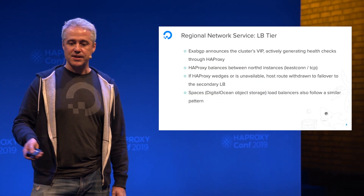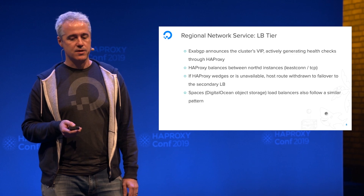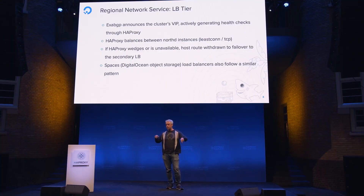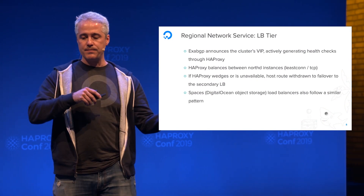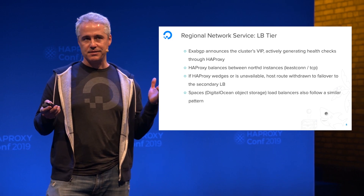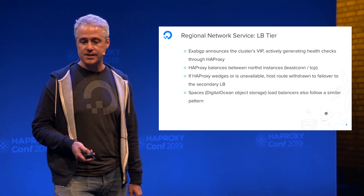The load balancer tier is consistent with any bare-metal clusters at DigitalOcean. We have a process called ExaBGP which is responsible for peering with the upstream top-of-rack switch, announcing the cluster's VIP and actively health-checking through HAProxy. HAProxy itself is balancing between the NorthD instances with a relatively straightforward configuration — least connection, TCP, running 1.8 at the time. If HAProxy wedges or is unavailable for any reason, the host route is withdrawn and we fail over to the secondary load balancer. This general pattern is consistent with many services internally deployed on bare-metal, such as Spaces.